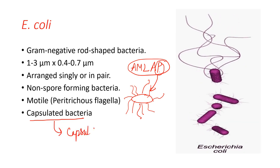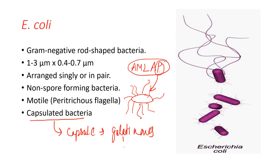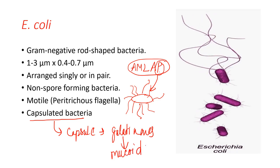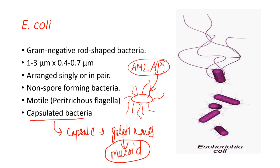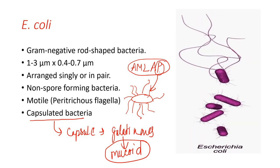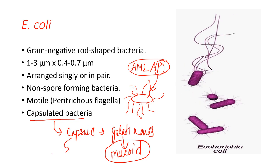E. coli is a capsulated bacteria, meaning it possesses a capsule. The capsule is the outermost gelatinous layer present outside the bacteria. When bacteria have a capsule, they have mucoid colonies. Therefore, the colonies of E. coli are mucoid. Similarly, Klebsiella is also a capsulated bacteria, so its colonies are also mucoid. The capsule helps the bacteria escape phagocytosis — when phagocytic cells come to engulf the bacteria, the capsule helps them evade this defense.